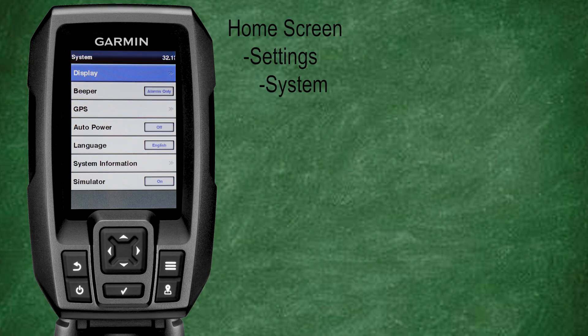This is extremely useful in helping you navigate through and understand where in various menus and submenus you are. Under the Systems menu you'll see settings that are adjustable for display, beeper, GPS, auto power, language, system information, and simulator.